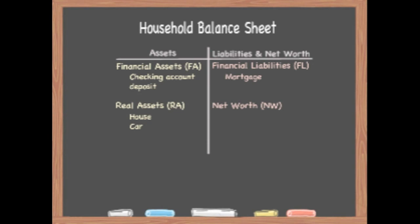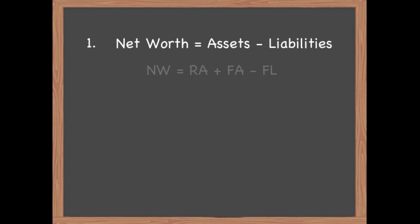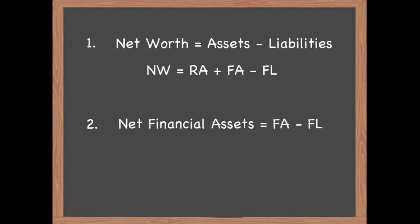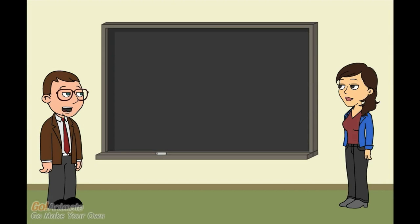Net worth is a residual variable that balances and preserves the equality. The equation shows that the sum of all financial assets plus real assets must equal the sum of all financial liabilities plus net worth. The first equation shows that net worth equals assets minus liabilities. The second shows that financial net assets equal financial assets minus financial liabilities. So to have positive financial net assets you must have more claims on others than others have claims on you?